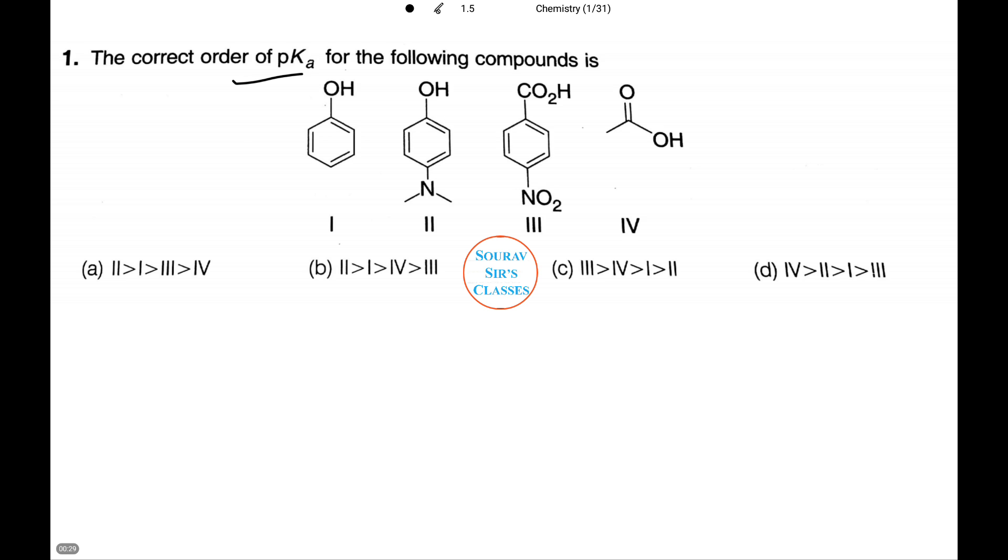In our first question we need to find the correct order of pKa from the following compounds. The first one is phenol, the second one is an N-substituted aminophenol, the third one is acetic acid, and the fourth one is 4-nitrobenzoic acid.